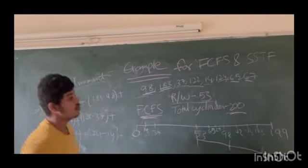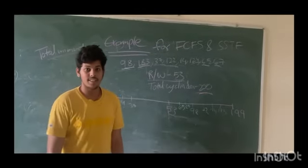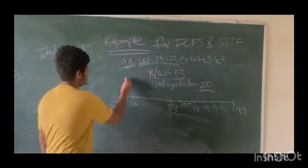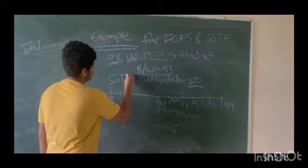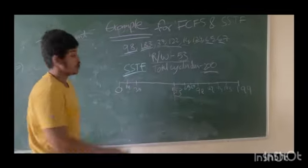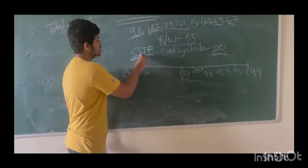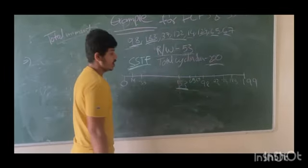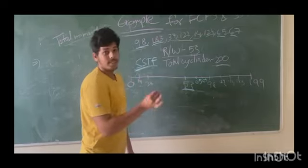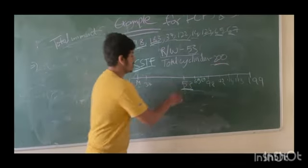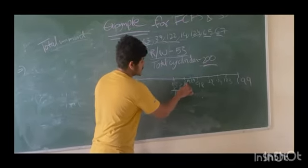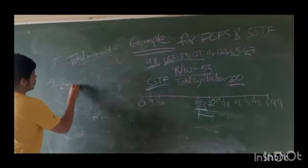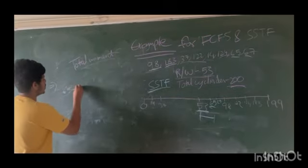So next we move to SSTF. This is the same problem we will solve for SSTF. So SSTF is Shortest Seek Time First. The main thing is we start at 53, so we need to choose the one which is closest to this. From 53, the closest one is 65. So next we move to 65, which is 65 minus 53.